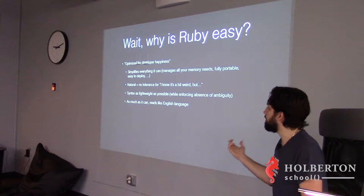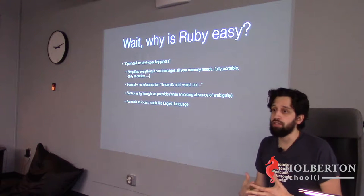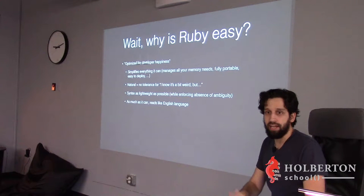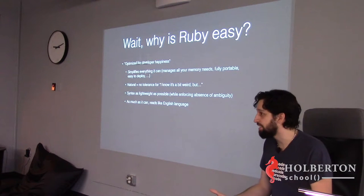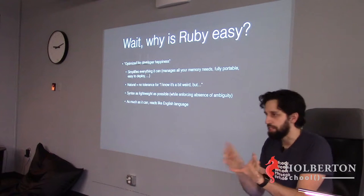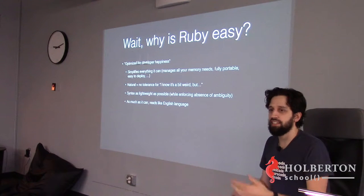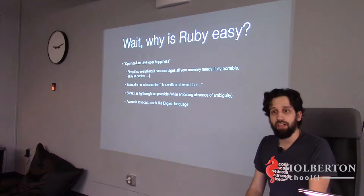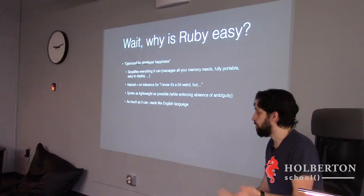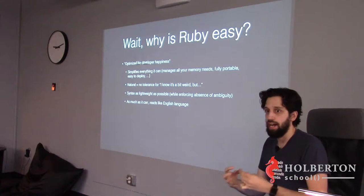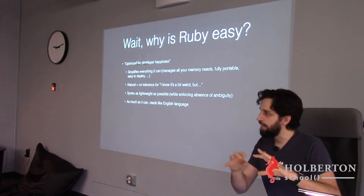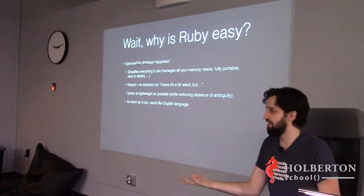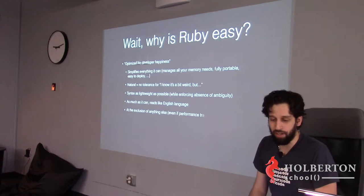Something really cool about Ruby — and you could compare it with Python — is that as much as it can, it will try to read like the English language. It doesn't mean you write it like English because of course it has a syntax. But when Ruby's core API is defined, the designers thought: 'if I write this in English, can I make it so that when people use it, it reads like English?' You'll see it's actually quite a fun part of Ruby.